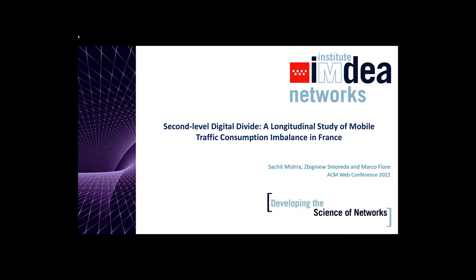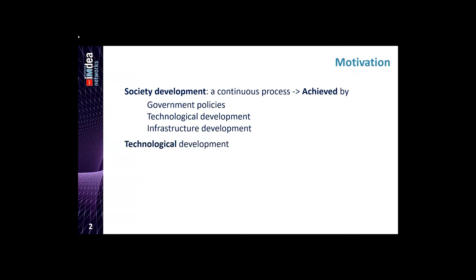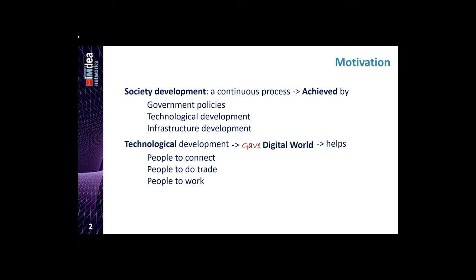Before discussing the second level digital divide, let's talk briefly about the motivation factor. Society development is a continuous process achieved by government policies, technological development and infrastructure development. Technological development has given us today's digital world, with which we can connect, do trade, and work online. The question arises: why do we need society development? Policies and infrastructure help us achieve equality — whether gender equality, economic equality, or today's focus: digital equality.